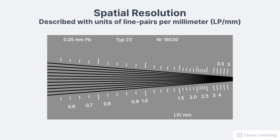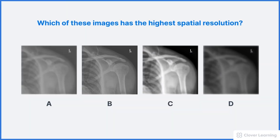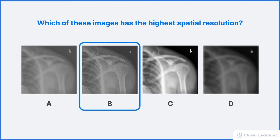It's also possible to describe spatial resolution with a measurement called the modulation transfer function, or MTF, but that's outside the scope of this lesson. Here's a quick practice problem so you can test your understanding: which of these images has the highest spatial resolution? The correct answer is B. This image demonstrates the highest level of sharpness. The other images all have varying levels of blurriness. This image does not have the highest contrast, but remember that contrast is a different image quality factor.